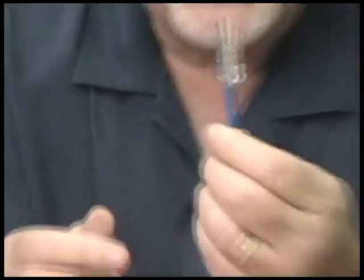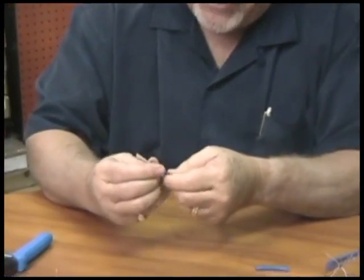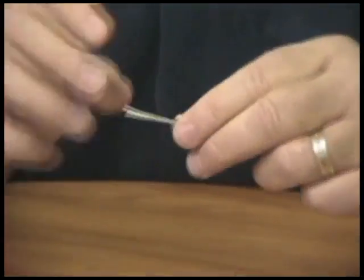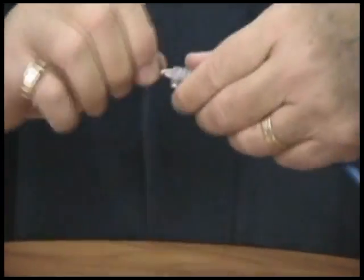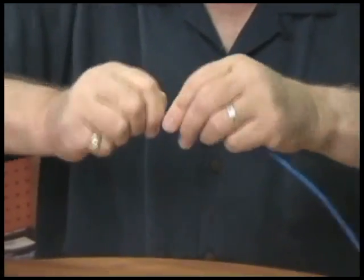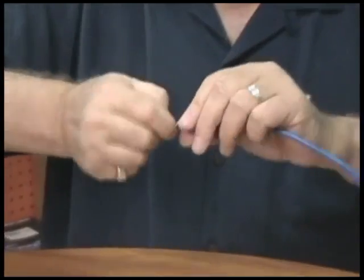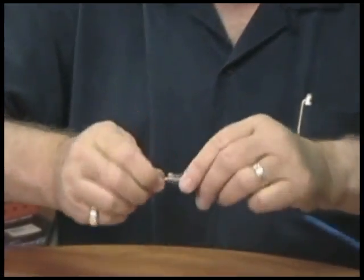So once you know that that's in correctly, you want to push the jacket up into the connector until it seats to the bottom. Then all you do is you twist the wires and you do this to keep the wire from slipping back down because it's important with category cable that you maintain the twist within the jacket and you want to keep the twist as close to the contacts on this connector as you can.